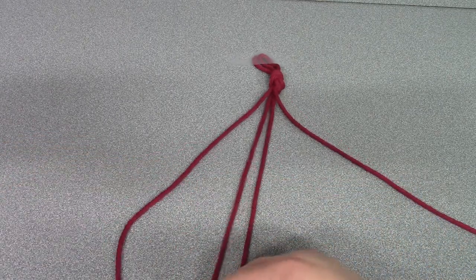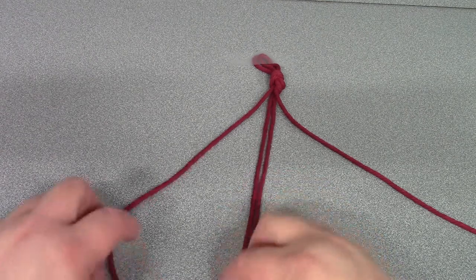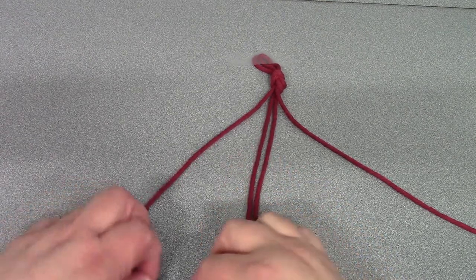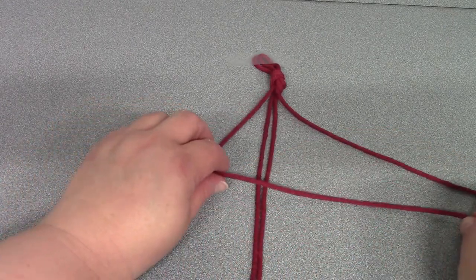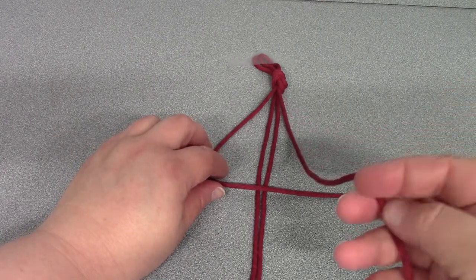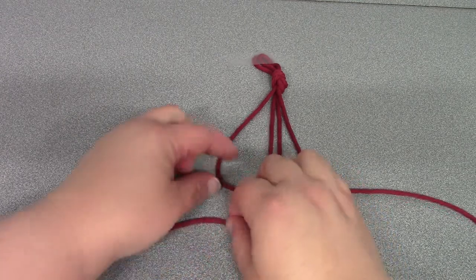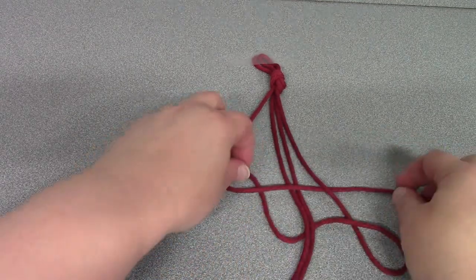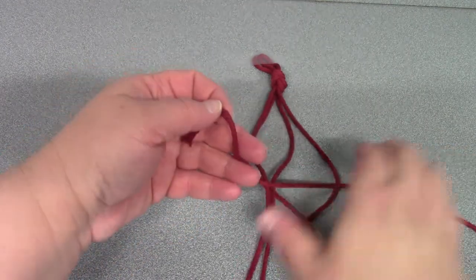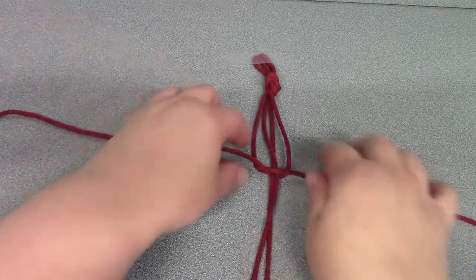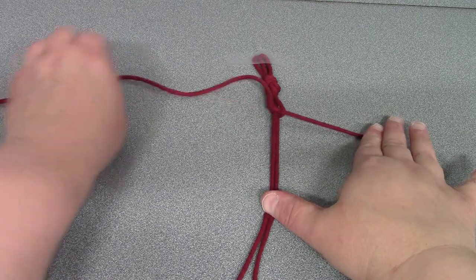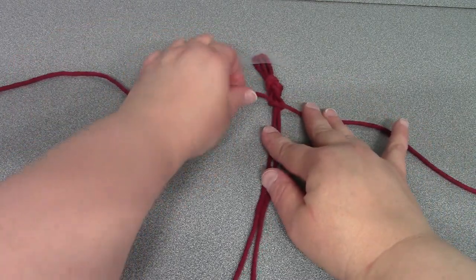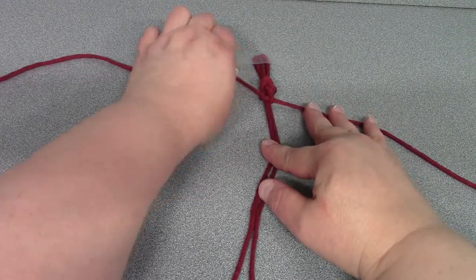So when we make a square knot we'll have our two center cords here. Those aren't really involved in the knot itself so we'll take our left cord and lay it over the top. The right cord will go over the left cord, underneath the two middle cords, underneath the original left cord we pulled over, and through the loop. And as you tighten these at the top you want to keep the tension as tight as you can. And this is the first half of your square knot.